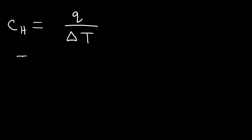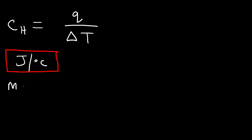It has the units joules per Celsius — it could be joules per Kelvin or kilojoules per Celsius — but that's the unit for heat capacity. It is an extensive property, meaning it's a property that depends on the amount of material. If you increase the mass of the substance, the heat capacity will increase.